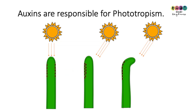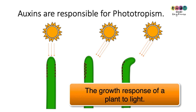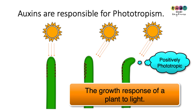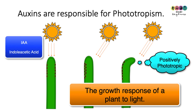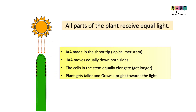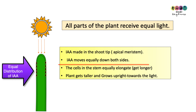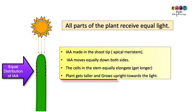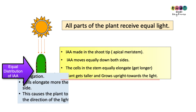Auxins — in particular IAA — are responsible for phototropism, the growth response of a plant to light, where stems are positively phototropic and grow towards light. When the plant shoots are exposed to equal amounts of light, the IAA made in the apical meristem at the tip of the shoot diffuses down equally through the stem, causing all cells to elongate, and the plant grows upright.